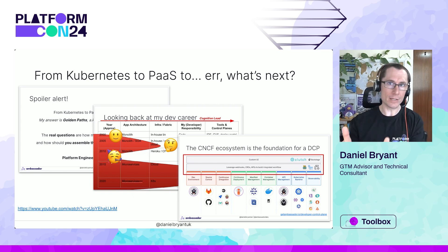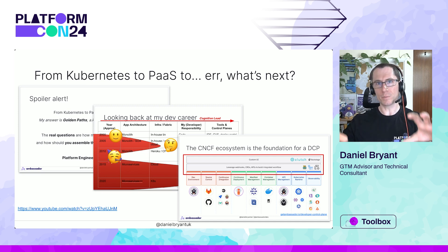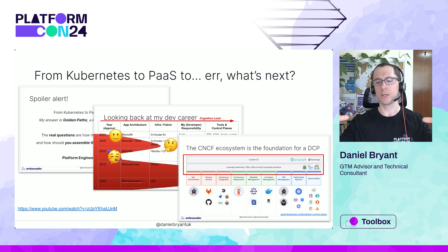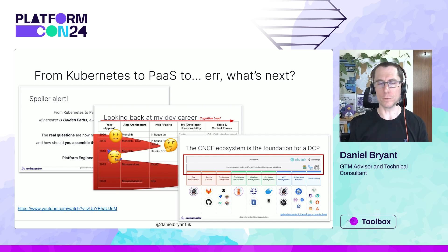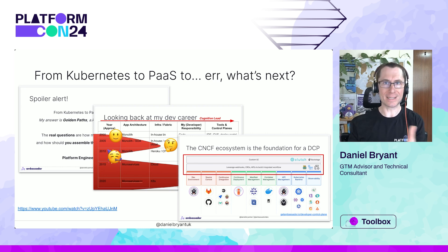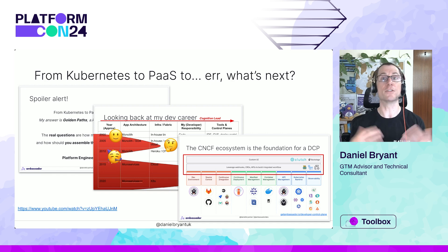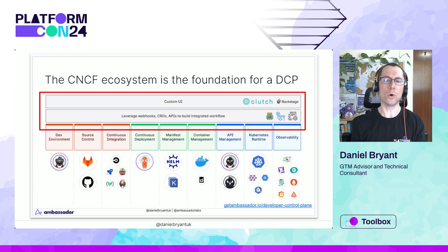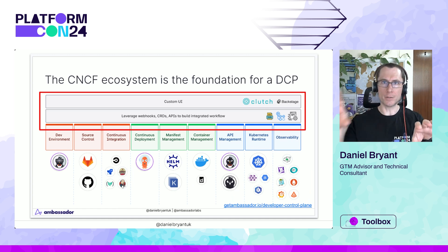Looking at the bottom right of the slide, you can see I was figuring out that there are three layers to what a platform should offer — what we were calling a developer control plane at the time. I was at Ambassador Labs, focused on creating a developer control plane.